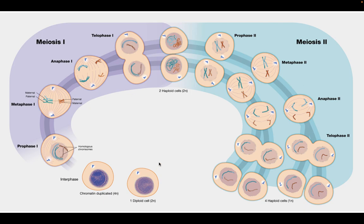When we initially have our diploid cell that has two copies of DNA, one from mom and one from dad, and we duplicate it, we do something a little bit different in meiosis I. The big thing done differently is we line up paternal and maternal chromosomes as pairs of two, rather than just individual chromosomes.